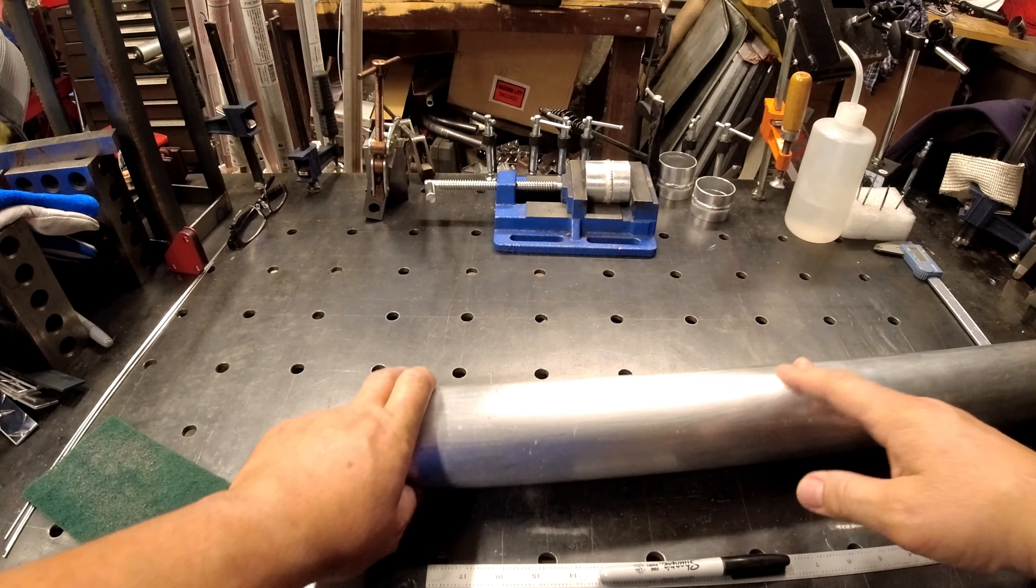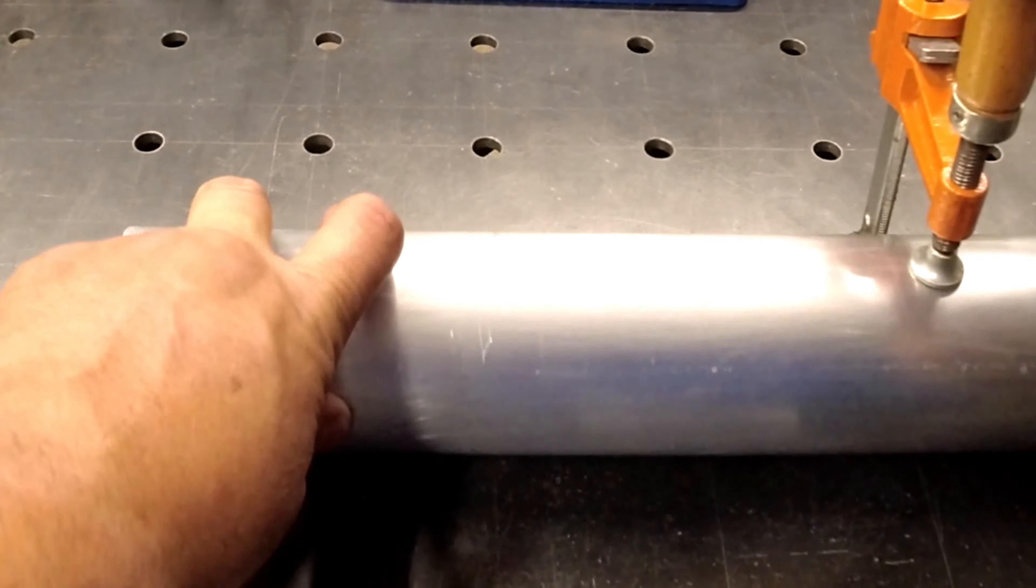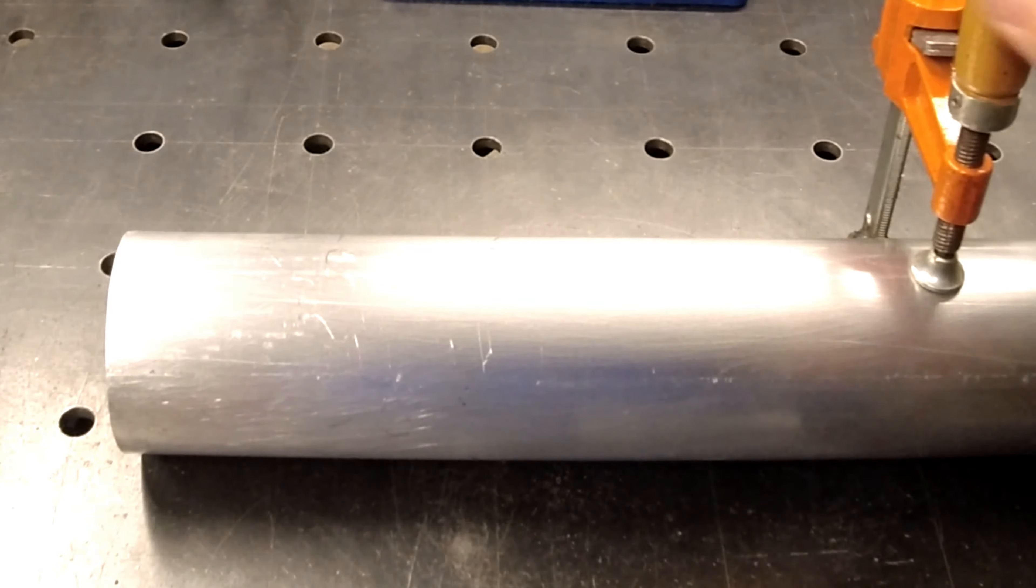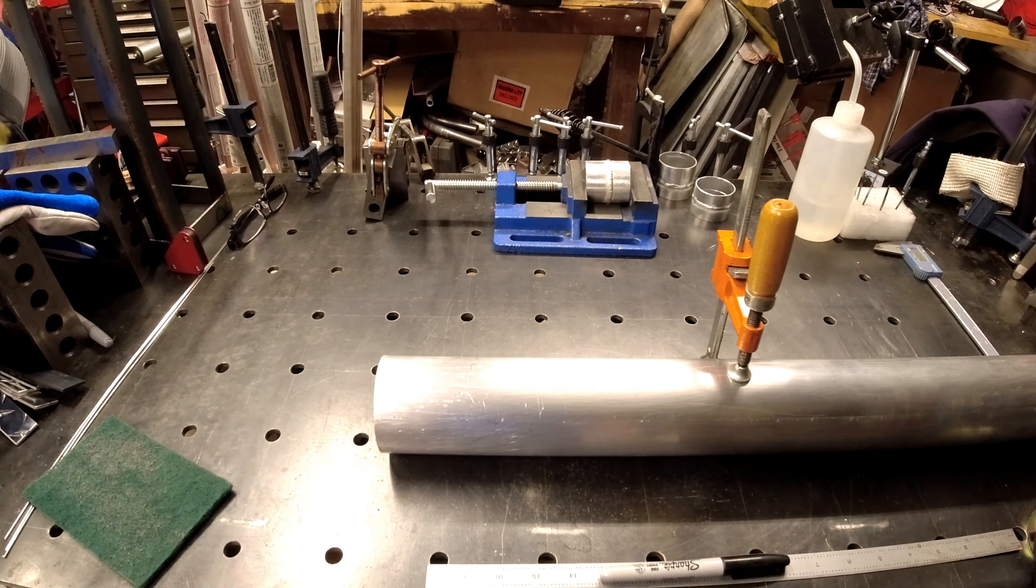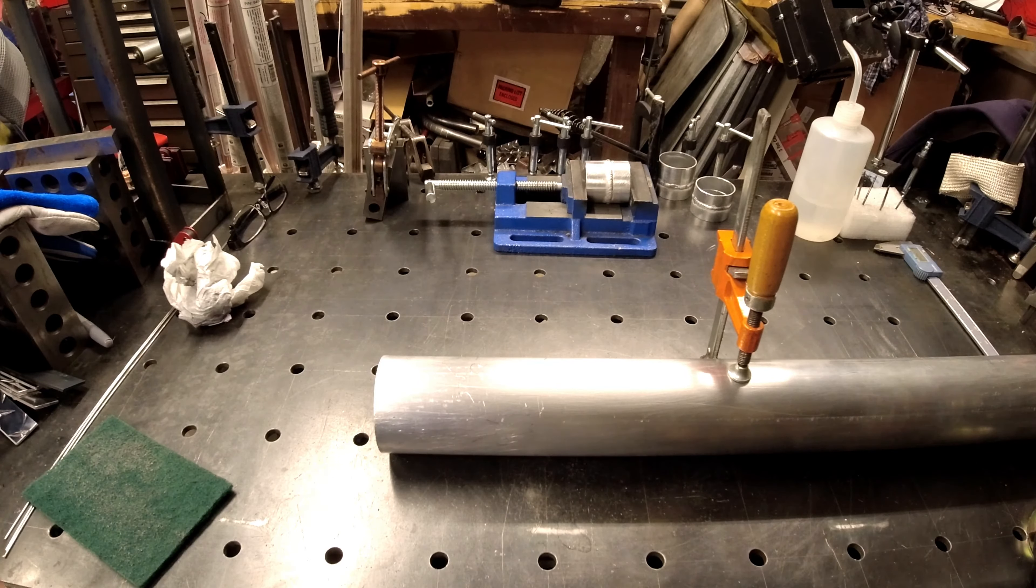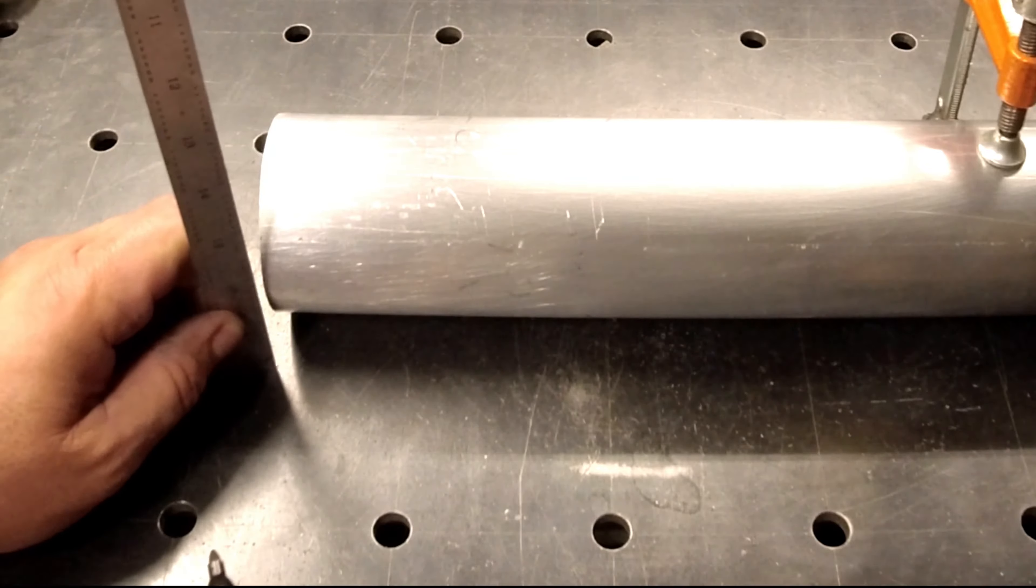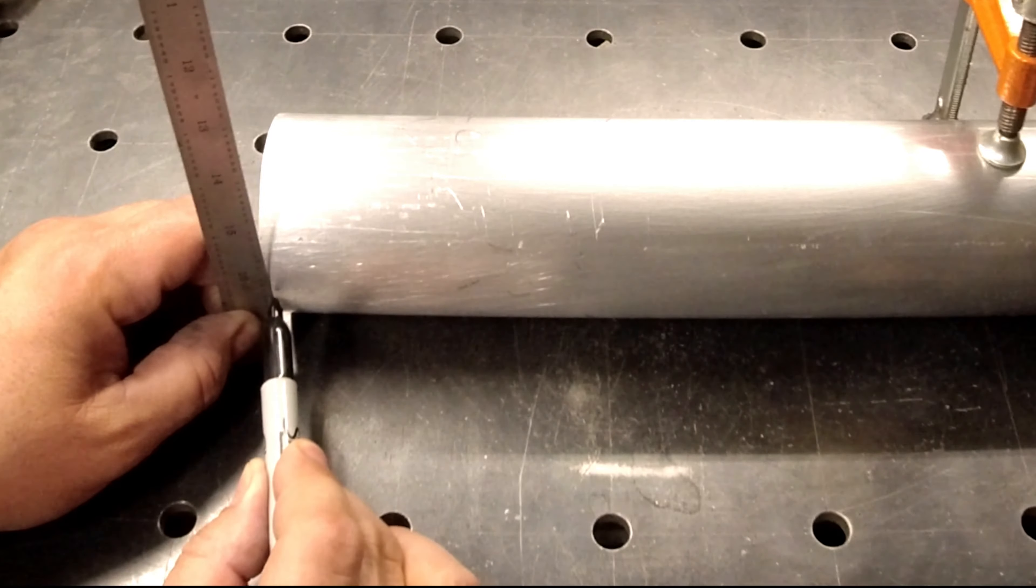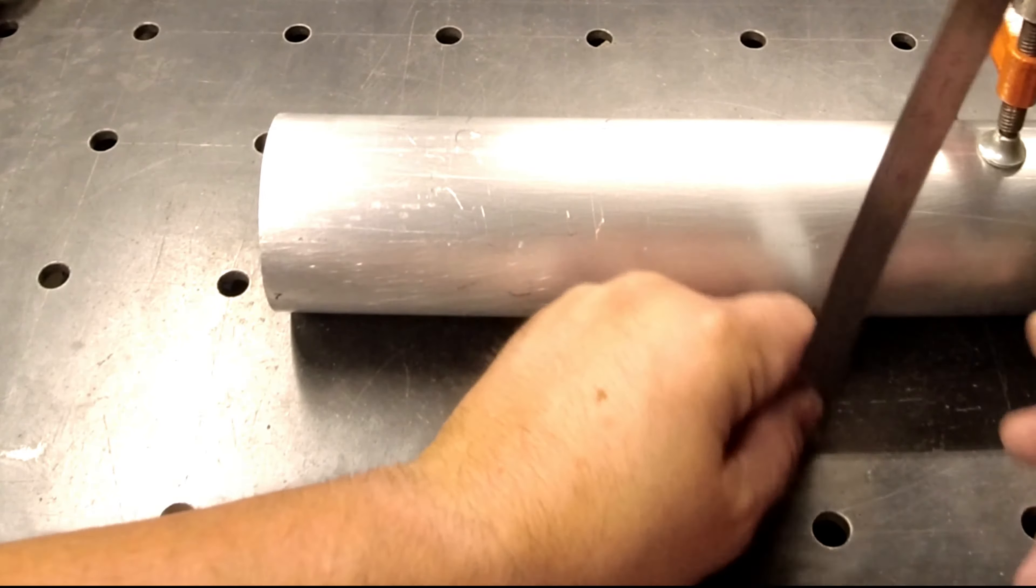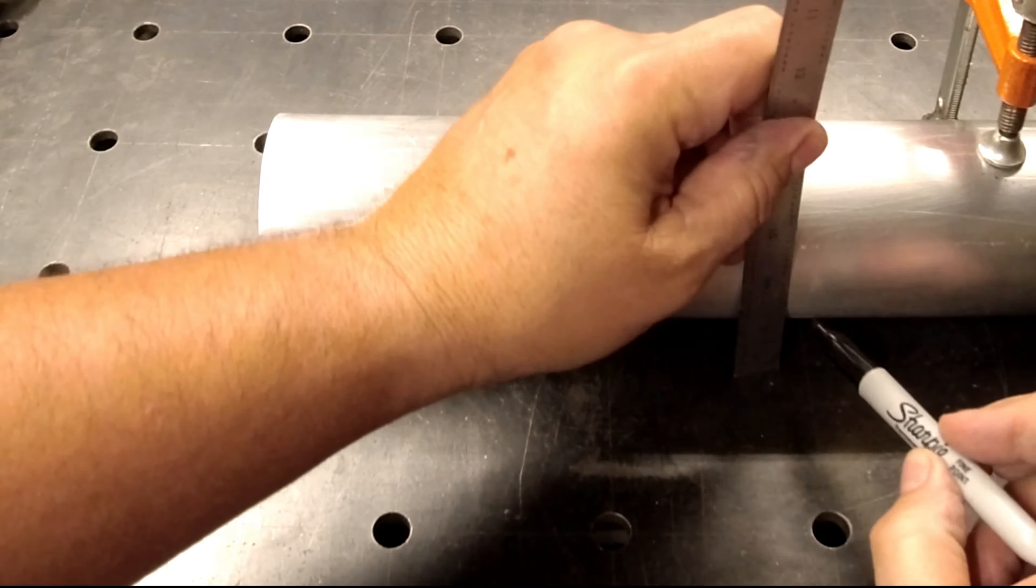All right, so we're just going to take our tube, we're going to set it on the weld table. And if you want any information about this weld table, I'll leave a link in the descriptions - we actually built this on our Jeeping MOA channel. All right, so we know that this is a three-inch tube. So what's half of three inches? It's inch and a half. So we're just merely going to take a marker and we're going to mark it at an inch and a half.